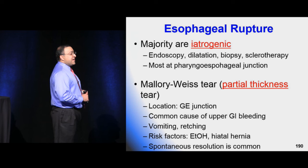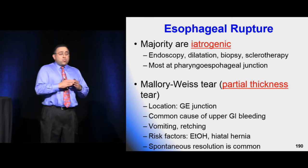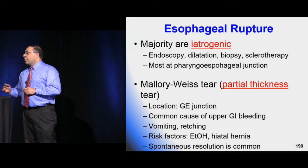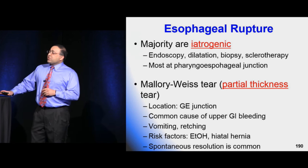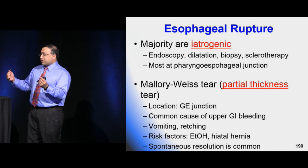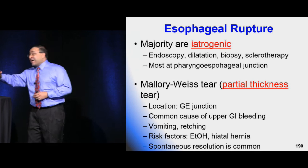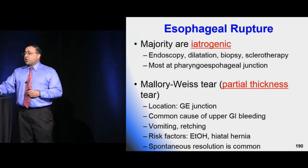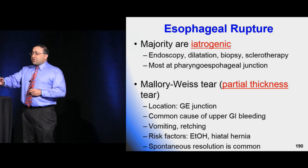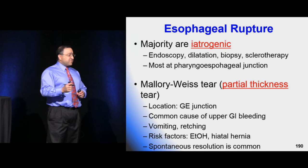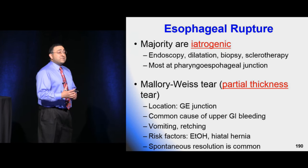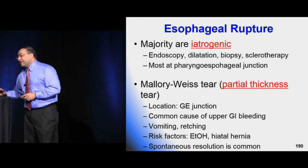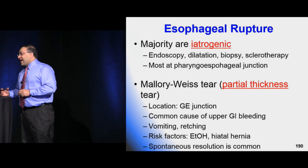Always consider esophageal rupture in your differential for chest pain. On the board exam, there are essentially five causes of chest pain: ACS, PE, dissection, pericarditis/tamponade, and Boerhaave's syndrome. You have to think about Boerhaave's — I've seen it probably about 12 times in my career, and 11 were on board exams. The ABEM general hospital population is a very unusual one — typically retching, vomiting alcoholics.